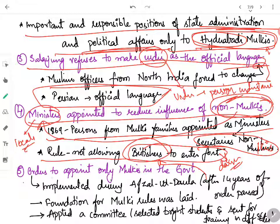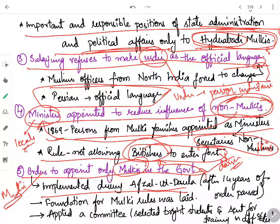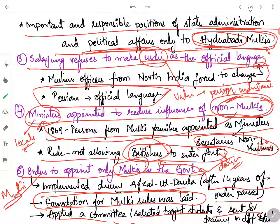He also gave orders to appoint Mulkis in the government. Slowly, as Mulkis got educated and gained knowledge, he started employing them in the government. It was not implemented immediately when the order was passed, but was implemented during Afzal ud-Daula after 14 years. The foundation for Mulki rules was laid during this period. He appointed a committee to select bright students to be sent for training in different states, so Mulki students could eventually get jobs and rule their own state.